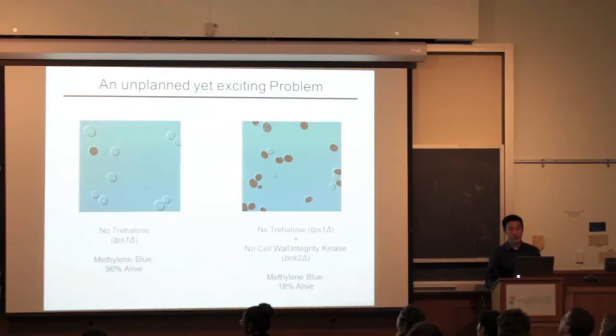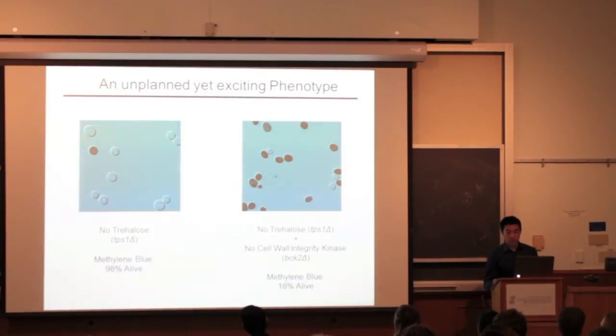However, before I continued, I discovered an exciting problem, or I'd like to think an interesting phenotype. When supporting the desiccation assay, I noticed that cells were dying even without any desiccation stress. To examine this further, I conducted what we call a methylene blue staining experiment.